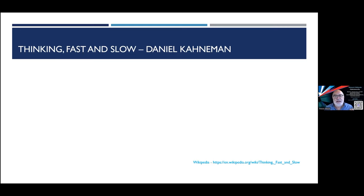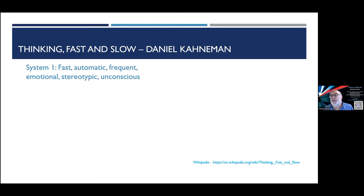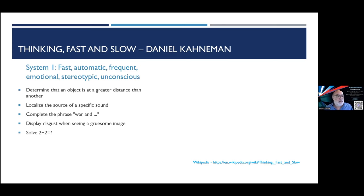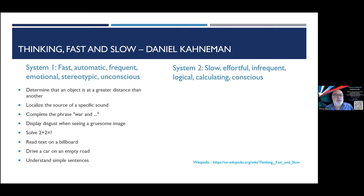Daniel Kahneman came up with the concept of 'thinking fast and slow,' dividing cognition into two systems. System 1 is fast, automatic, frequent, emotional, stereotypic, and unconscious — like determining if an object is closer than another, completing a phrase such as 'war and...' — we'll all say 'peace' — or solving simple arithmetic. System 2 is slow, effortful, infrequent, logical, calculating, and conscious.